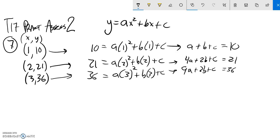Great. So now I'm going to take that and write it as a matrix so I can solve it. So A, B, C, and 10. 4As, 2Bs, 1C, and 21. 9As, 3Bs, 1C, and 36.